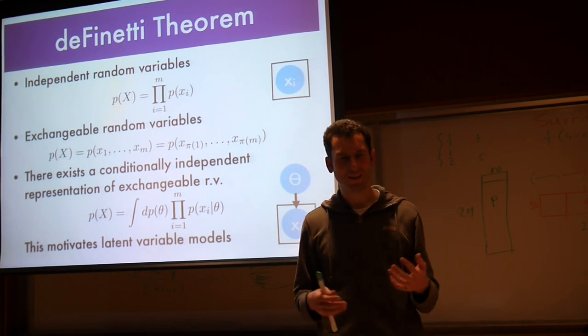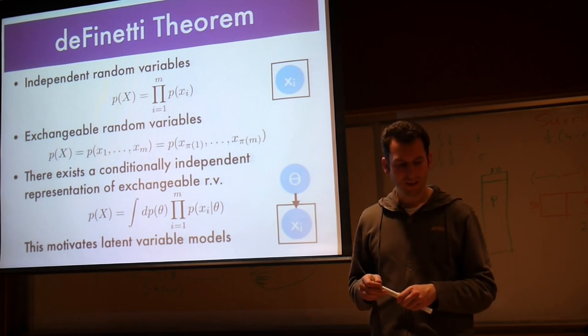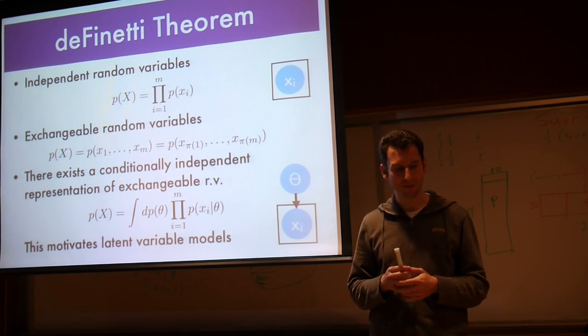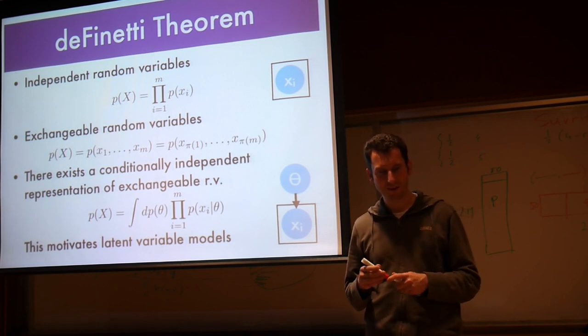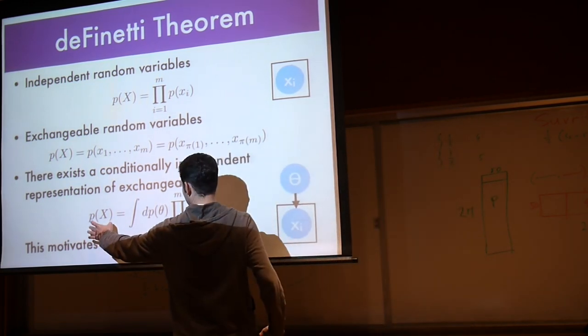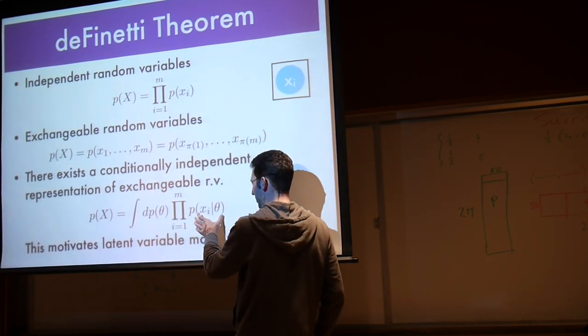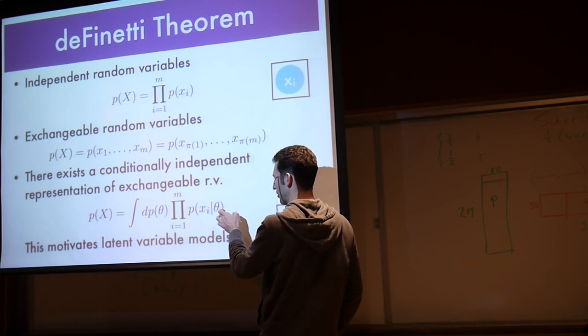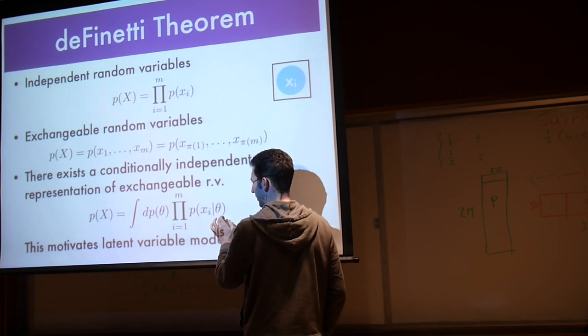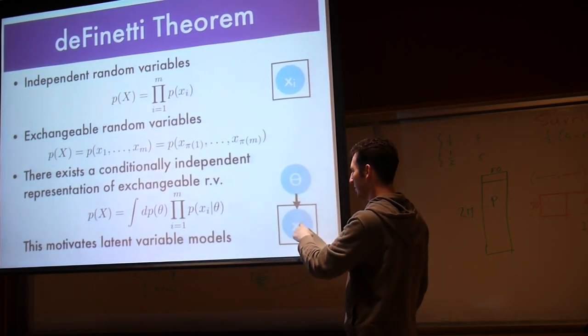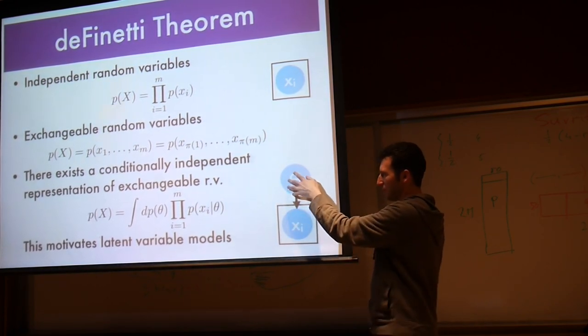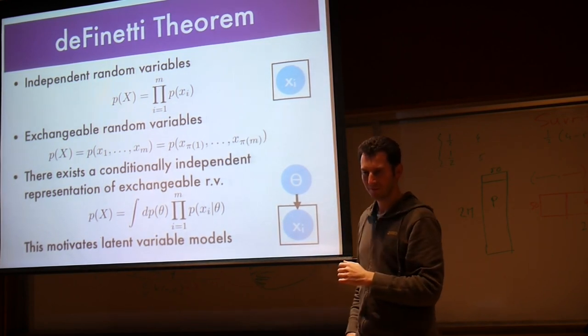Because if you know the first four numbers, you know which number is missing, so you can immediately determine the fifth one. Clearly, the last element is perfectly determined given the previous four, so it's not independent. However, it's exchangeable if I just look at random permutations. If I permute the random permutation again, I get another random permutation. Now, the nice thing is that de Finetti's theorem tells us that if we have this, there exists a conditional independent representation of these exchangeable random variables.